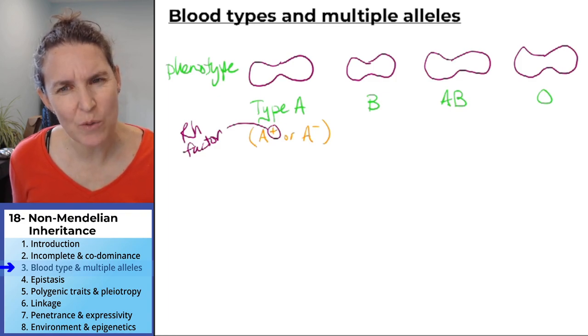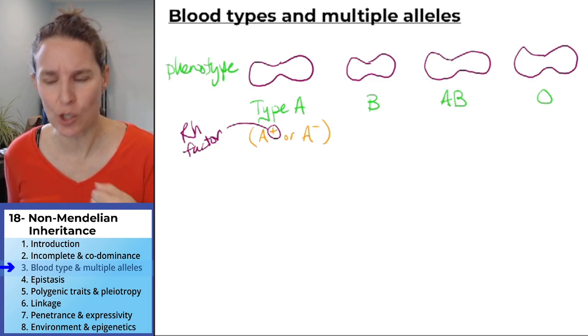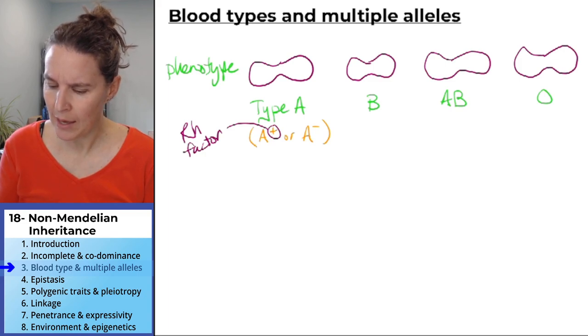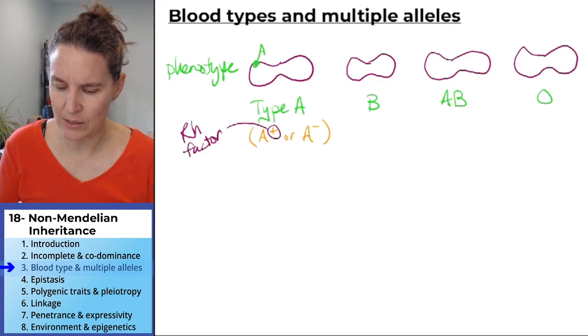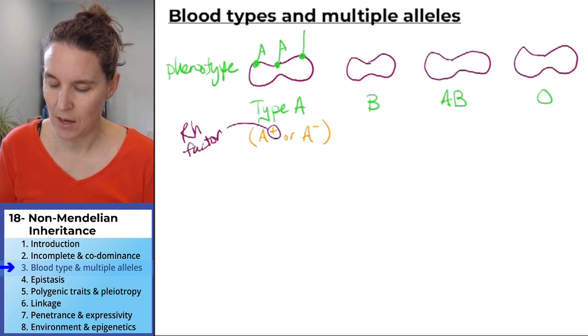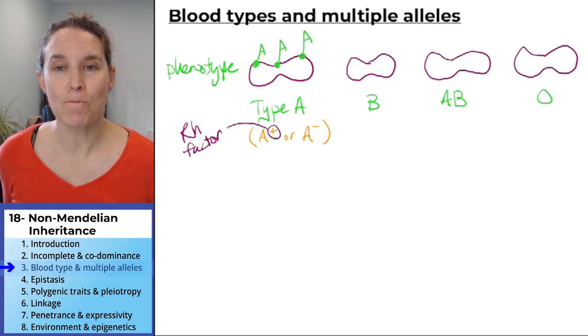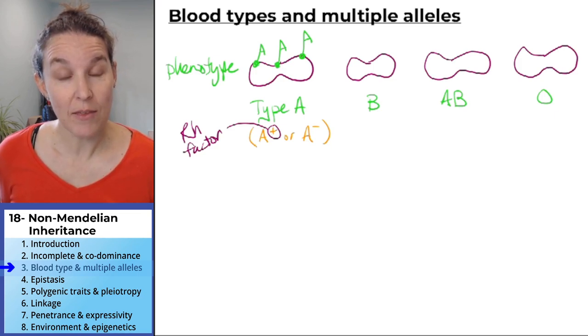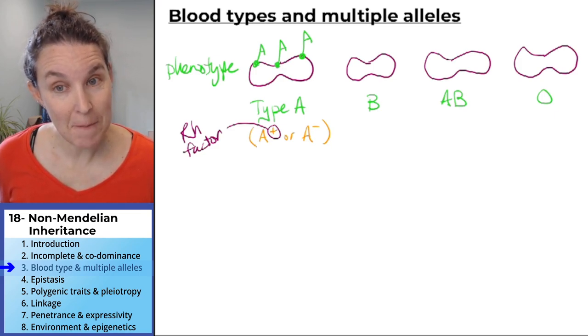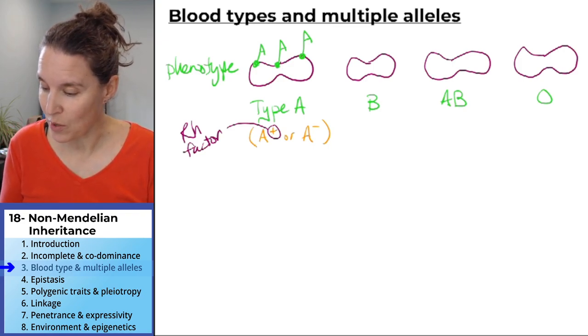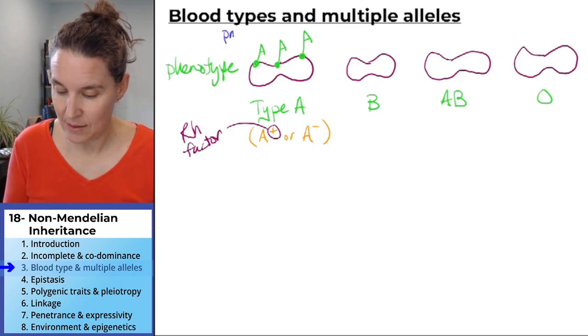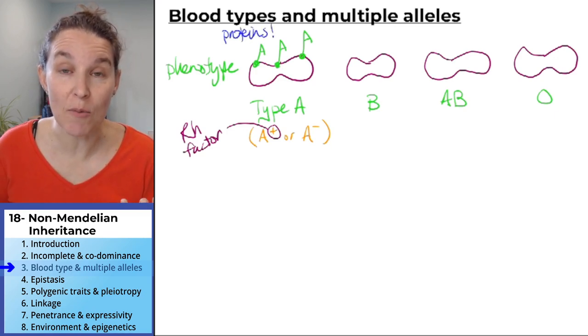But what is the actual phenotype of a type A blood human? Well, they have these things called antigens embedded in their cell membranes. Now think about this. These antigens are proteins, and I make them with little A's on the end so that I can remember that those are A antigens. And antigens are just proteins, which means how do we get proteins, home kids?